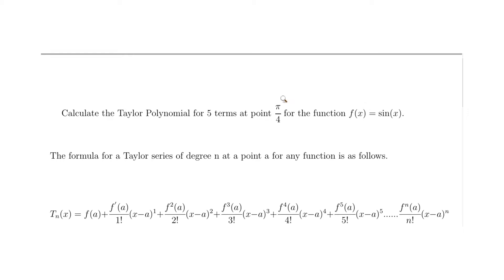In this video we're going to calculate the Taylor polynomial for five terms for the function sine of x at the value π/4. When calculating a Taylor polynomial, you need to know how many terms you're calculating for — here it's five terms, also known as degree 5 — and the point a, which in this case is π/4.